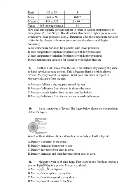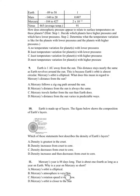Number 11. Mercury's year is 88 days long — that is about a fourth as long as a year on Earth. Why is a year on Mercury so short? A. Mercury's orbit is elliptical. B. Mercury's atmosphere is very thin. C. Mercury's rotation speed is very slow. D. Mercury's orbit is closer to the Sun.